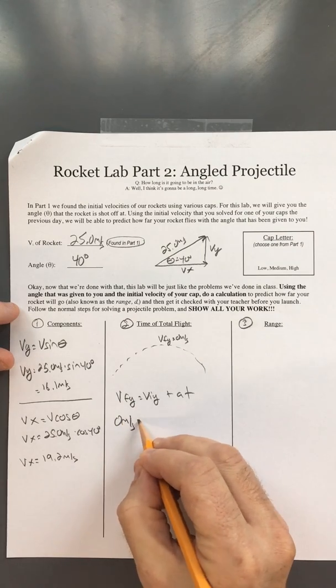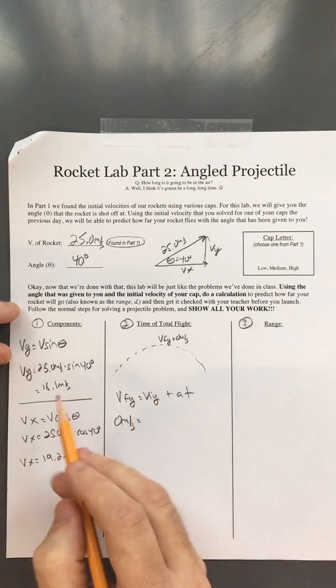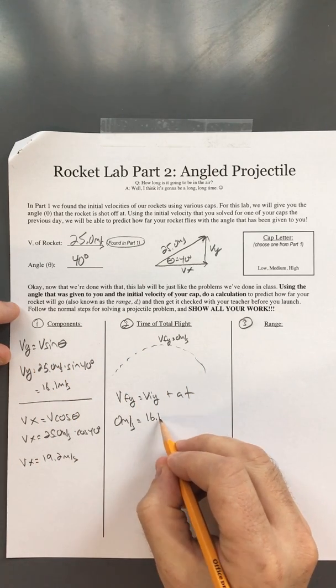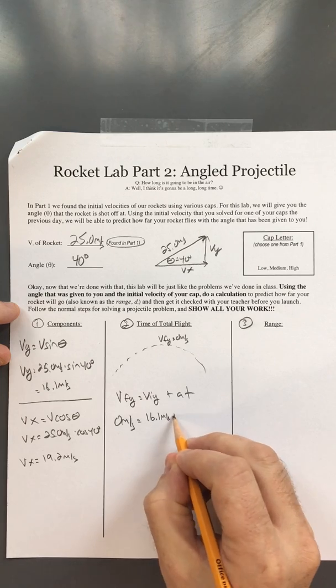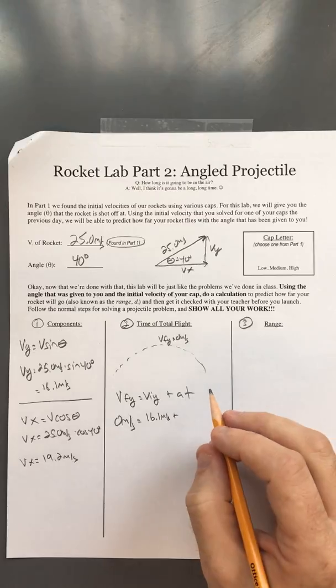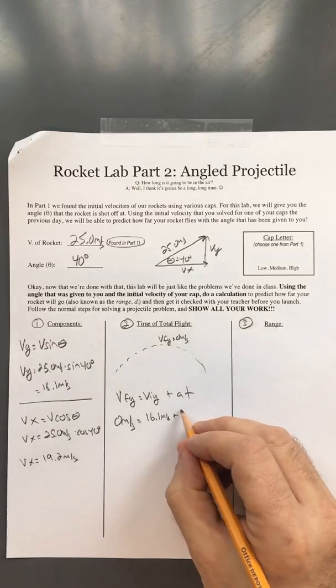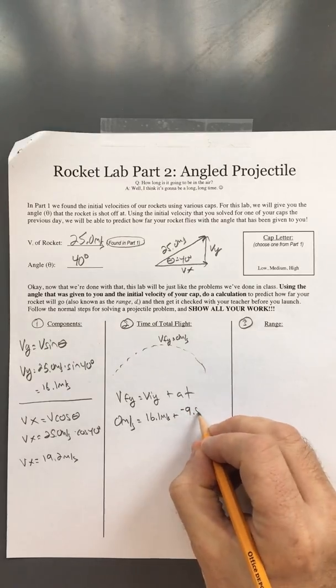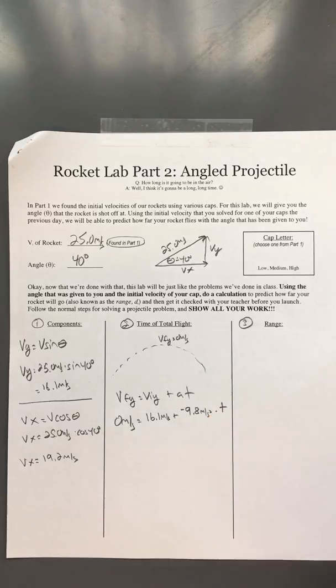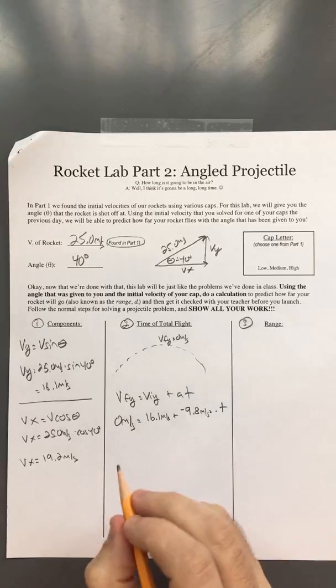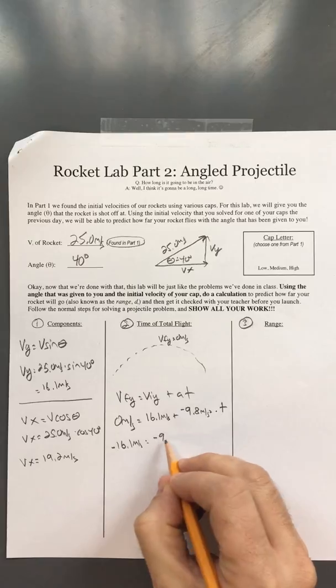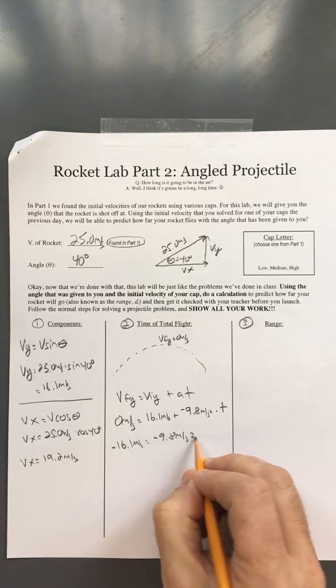The velocity at the top is 0 meters per second. Our initial y velocity is 16.1 meters per second from our components. For gravity, we'll use negative 9.8 meters per second squared since it acts downward. Time is our unknown. Rearranging to solve for time, we get negative 16.1 meters per second equals negative 9.8 meters per second squared times T. Dividing both sides by negative 9.8...